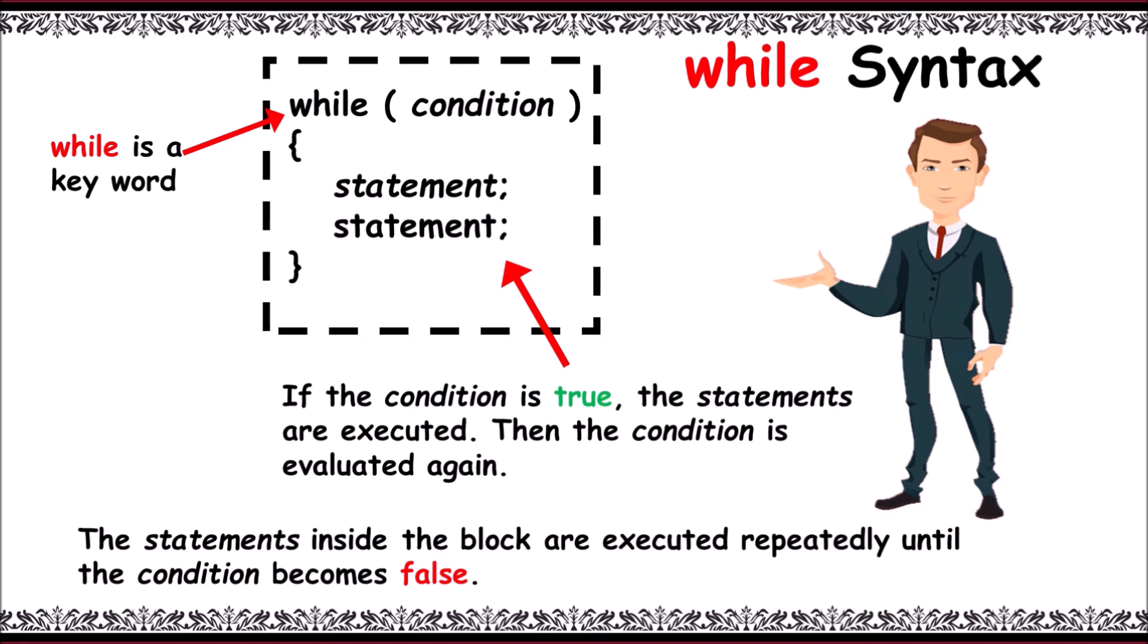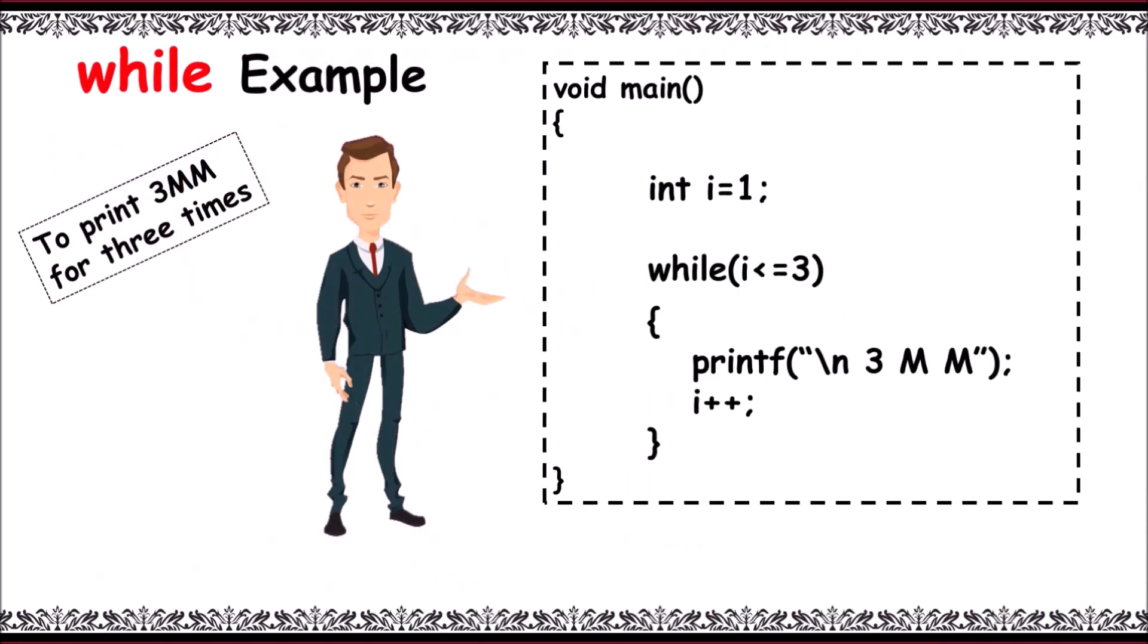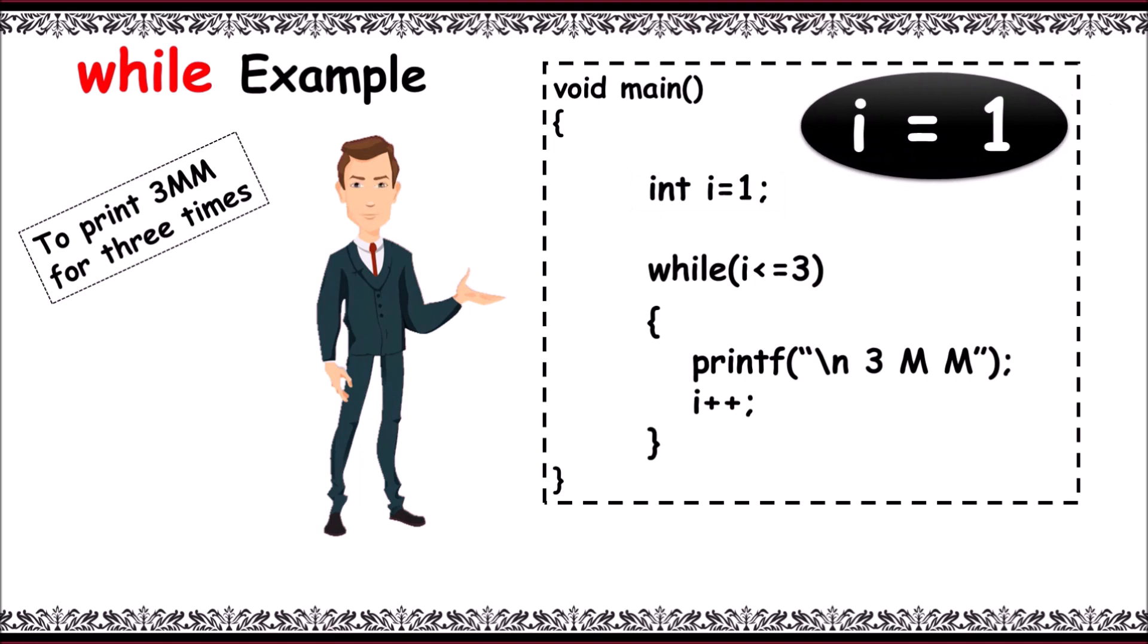Now let's write a sample program to print 3mm for three times using while. Let's initialize i with 1. Now i is equal to 1. Then let's use while loop to print 3mm for three times. Here it first checks for i less than or equal to 3, that is 1 less than or equal to 3.